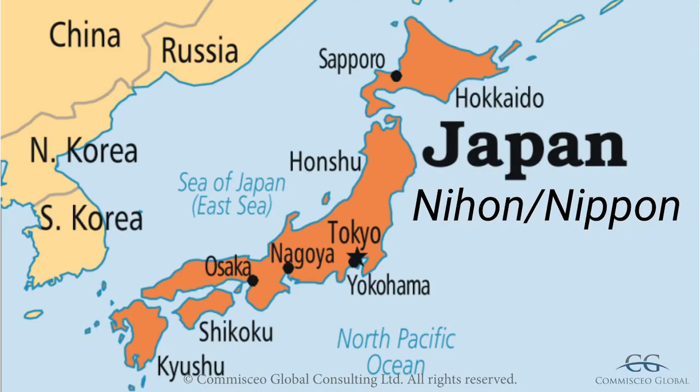Japan is an island nation located in the Pacific Ocean off the far east coast of the Asian continent. To the Japanese, the country is known as Nihon or Nippon, which loosely translates into English as Land of the Rising Sun. Its closest neighbours are China, South Korea, and Russia. The country itself is made up of many islands; however, there are four main islands: Hokkaido, Shikoku, Kyushu, and Honshu, which is the mainland.